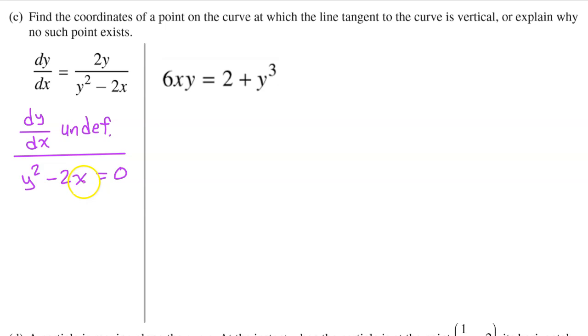To find the coordinates of x and y, we will need to solve this system of equations. Let's start by getting x by itself. So adding 2x to both sides, we have y² is equal to 2x. Now dividing both sides by 2, we get x is equal to 1/2 y².